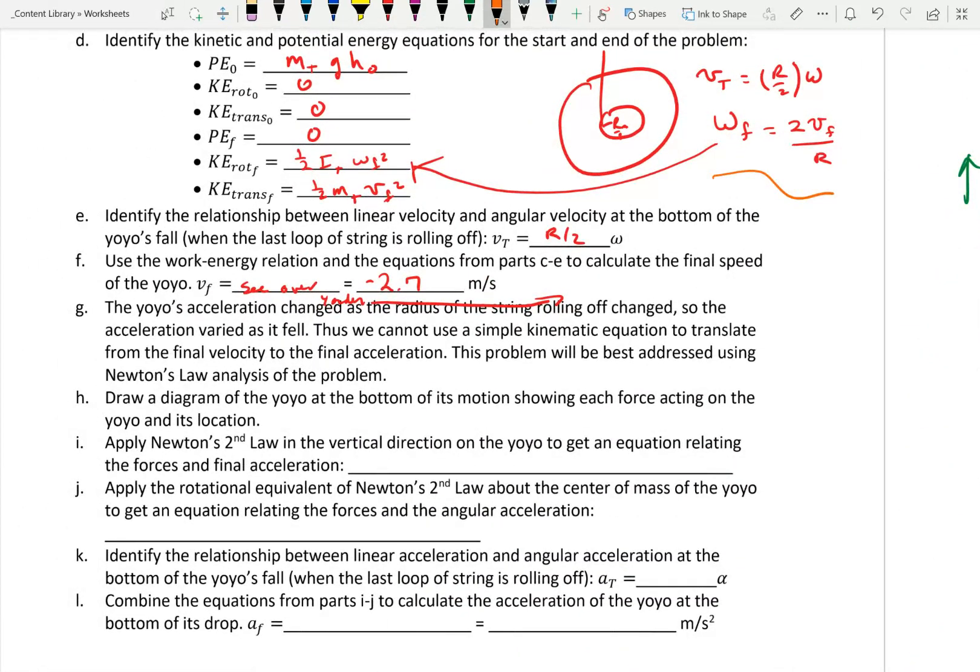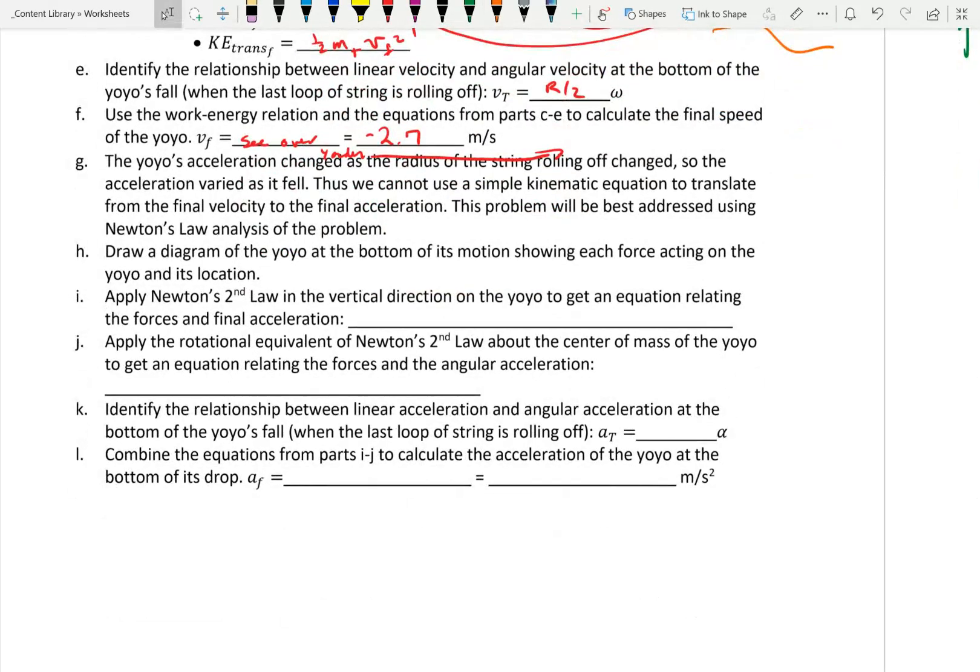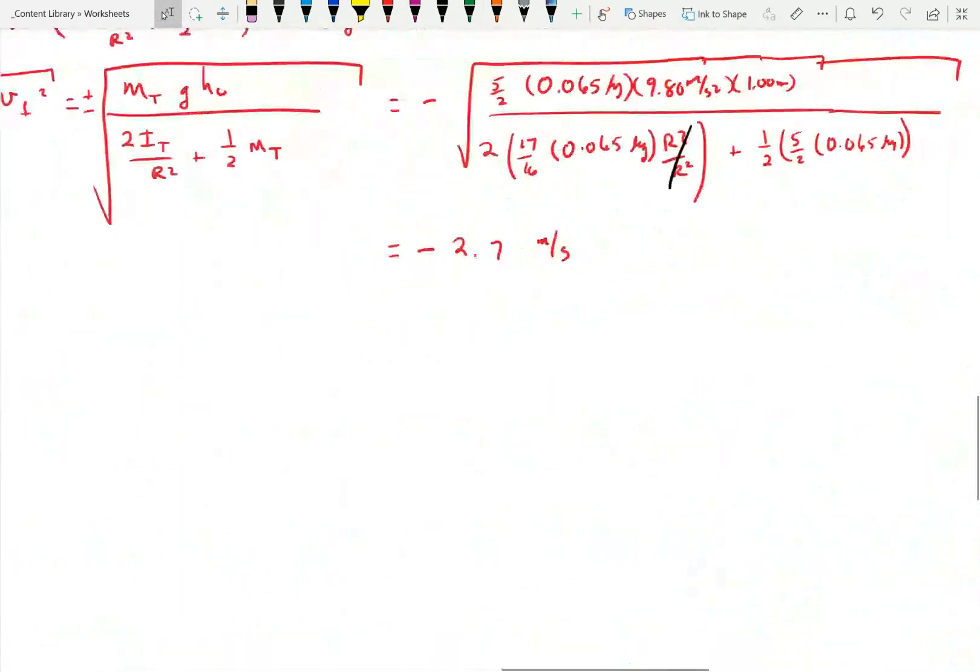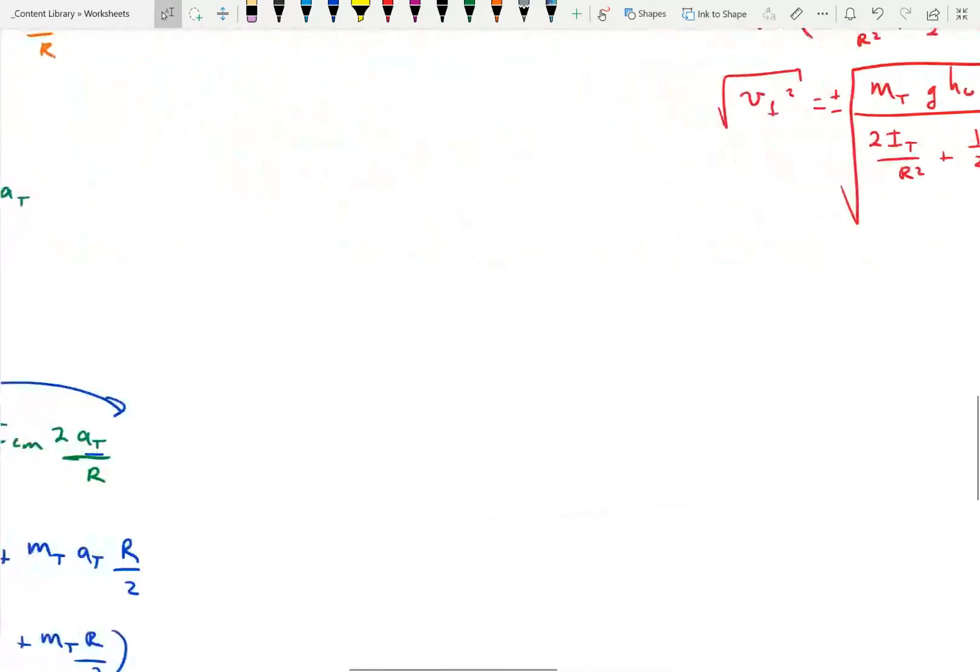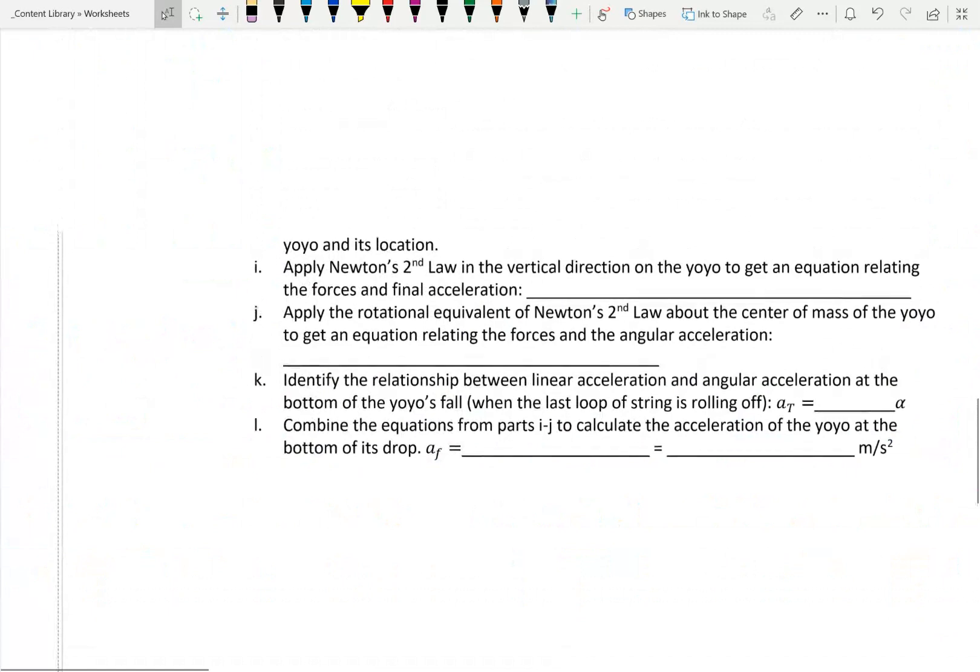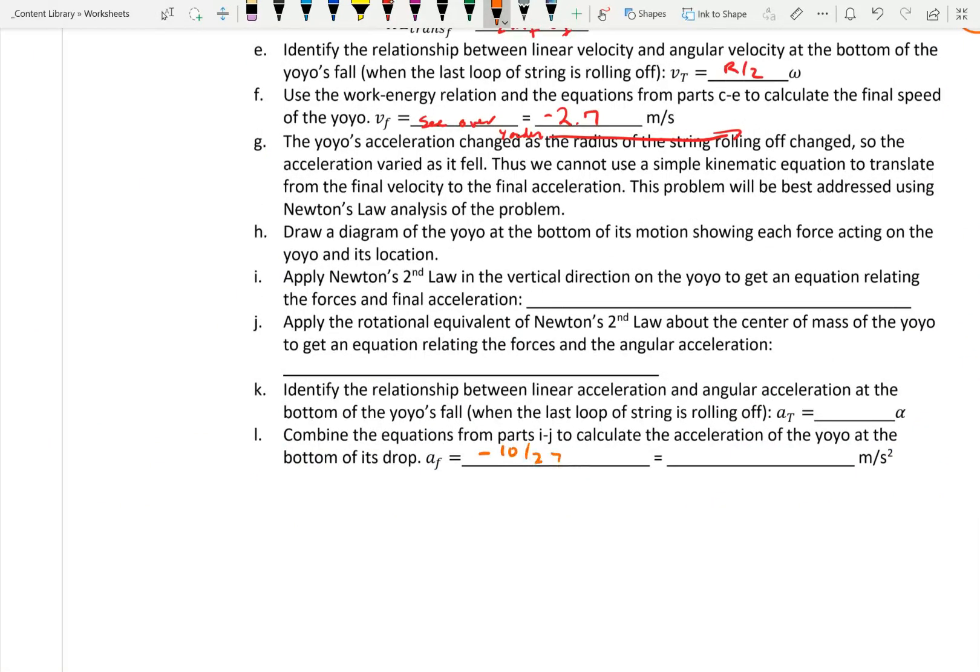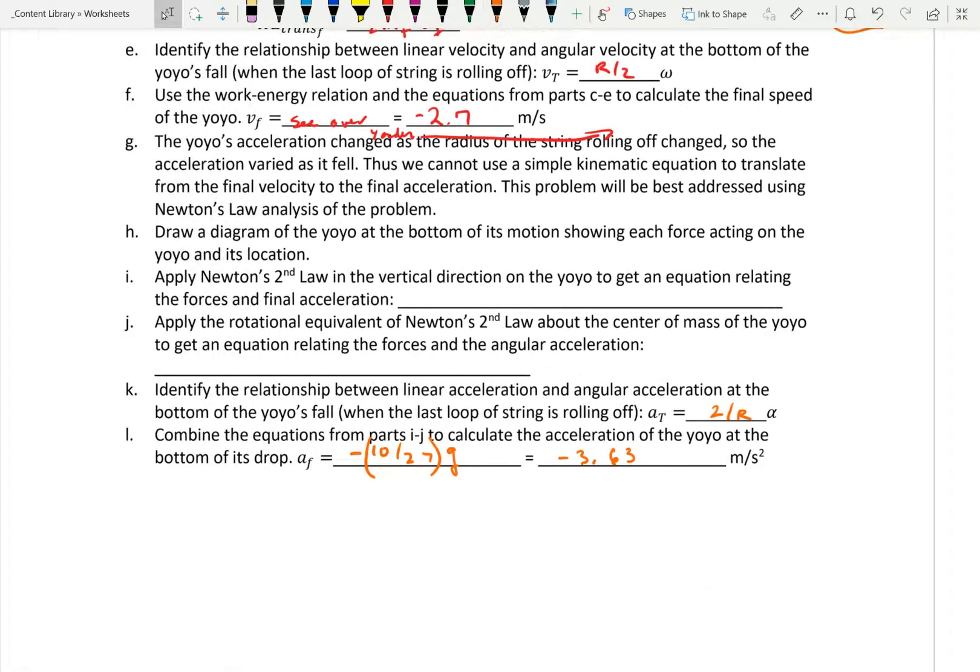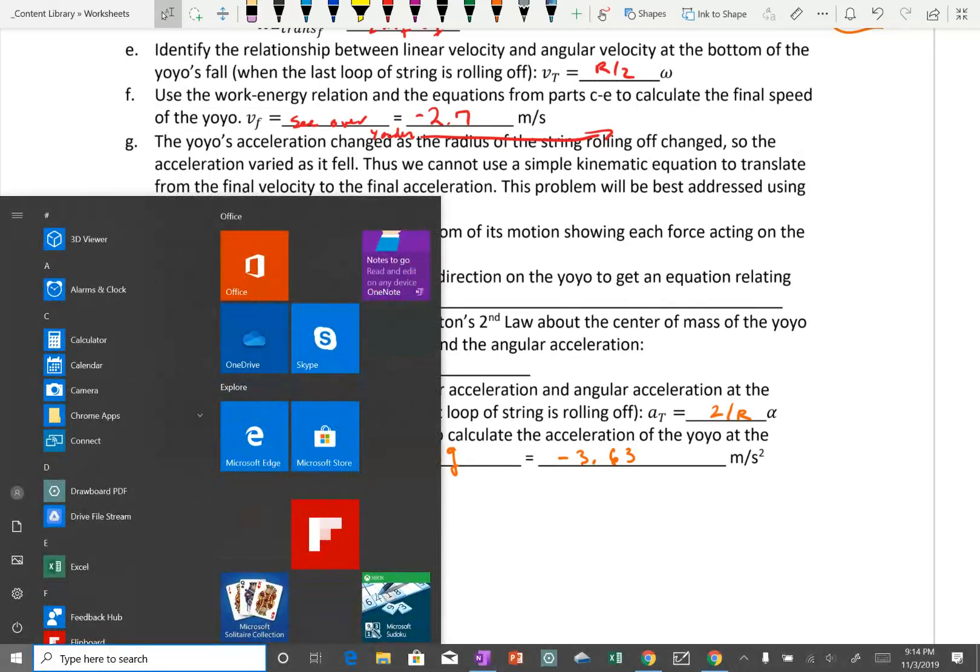Okay, I have done all the work here so my A final turned out to be the very simple form of minus 10 twenty-sevenths g which turned out to be minus 3.63 meters per second squared. All right hopefully that gave you some practice at another type of skill we'll have to see on the test.